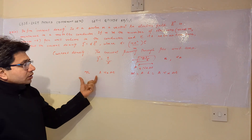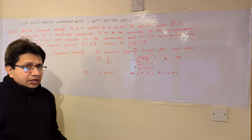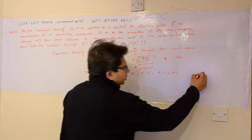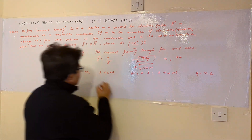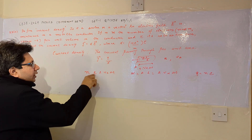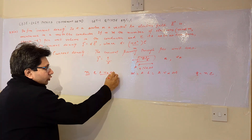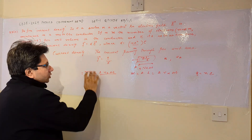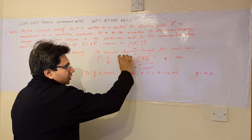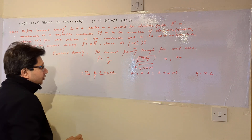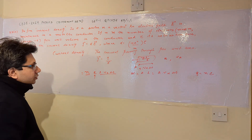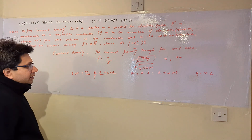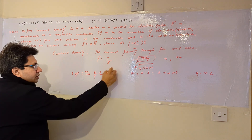The charge of one electron is e, so by the formula Q = ne, the total charge passing through this volume in time Δt is n·e·A·vd·Δt. We know that charge equals current multiplied by time, so Q equals i·Δt. Setting these equal, we have i·Δt = n·e·A·vd·Δt.